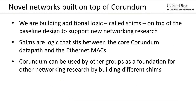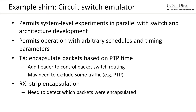On top of the core Corundum design, we can build hardware to support higher-level features. This logic can take the form of a shim that sits in between the core Corundum data path and the Ethernet MACs. This capability can be used to evaluate novel features including hardware protocol implementations and components for in-network computing. One possible application for a hardware shim is circuit switch emulation. Emulation is necessary to permit system-level experiments to run in parallel with the development of experimental optical switches. Emulation can also be used to explore the impact of optical switch performance characteristics independent of the switch technology.